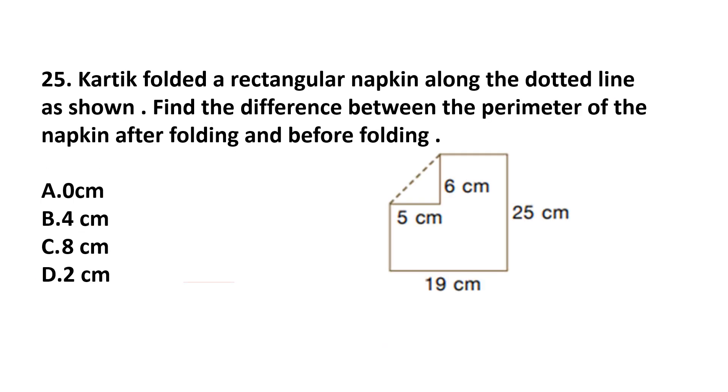Question number 25. Karthik folded a rectangular napkin along the dotted line as shown. Find the difference between the perimeter of the napkin after folding and before folding. This napkin is given and the breadth is 19 cm and the length is 25 cm. So what is the perimeter before folding? This is 25 plus 25 and 19 plus 19. This is 88 cm. Perimeter of this napkin is same before and after folding because only shape is changed. So difference between this napkin perimeter after folding and before folding is 0.